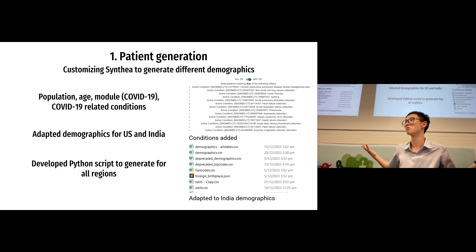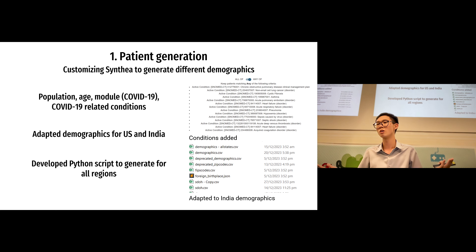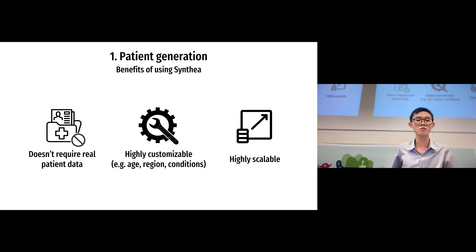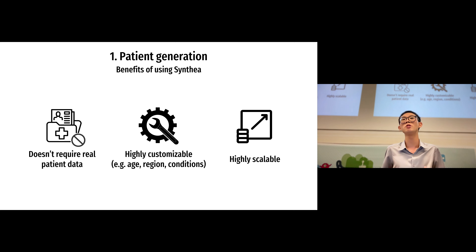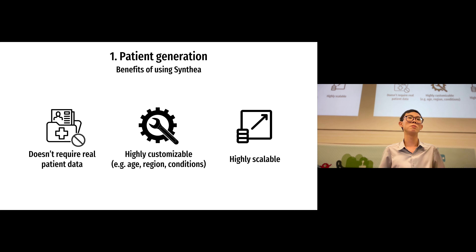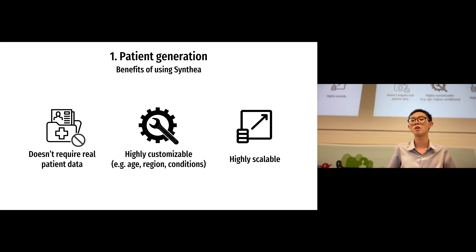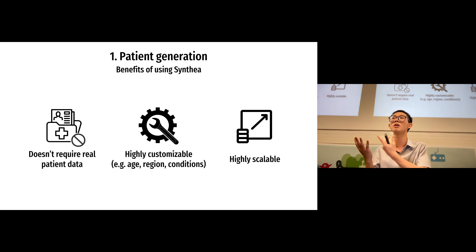You may wonder why so much work is necessary. That's because Synthea is only meant for the US population and US demographics. In order to customize it for different regions, I needed to change some of the demographic files. Some benefits of using Synthea are that it doesn't require any real patient data — which is important because most governments are unwilling to share private data for testing. It is also highly customizable so I can add different conditions based on research, and highly scalable — being software-based, I can create 10 patients or 10 million patients.